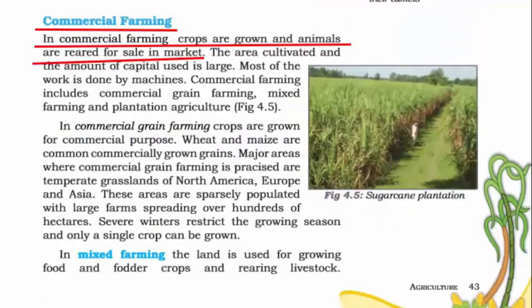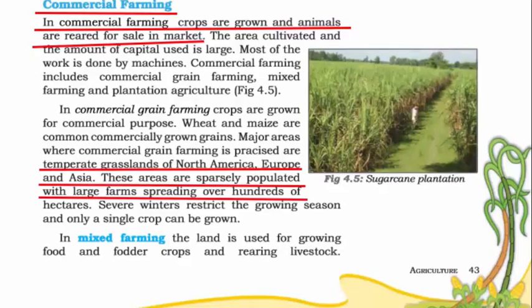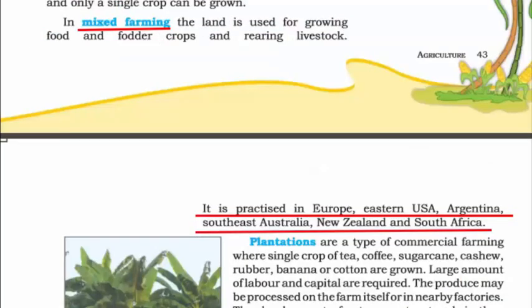Commercial farming means you grow crops and rear animals for sale in the market because you invest in capital, machinery, and human labor — hence the output needs to be sold in the market to earn profit. This type of farming is usually practiced in temperate grasslands of North America, Europe, and Asia, where large farms spread over hundreds of hectares and rivers support civilization. In commercial farming, you can grow just one crop, or do mixed farming — growing crops as well as rearing livestock like goats, sheep, and cows for dairy products. Mixed farming is practiced in Europe, Eastern USA, Argentina, Southeast Australia, New Zealand, and South Africa.